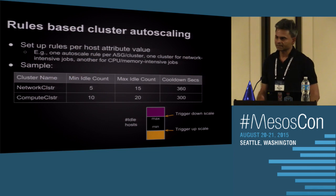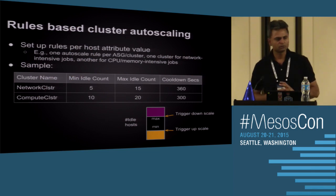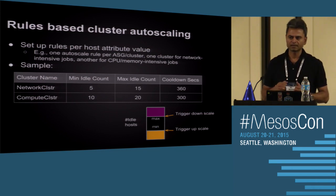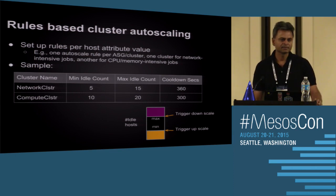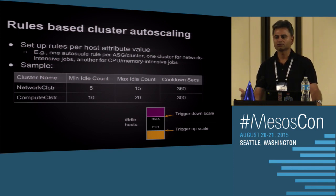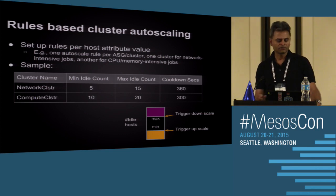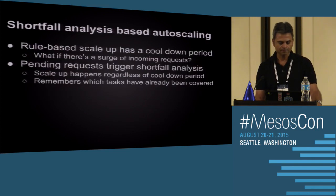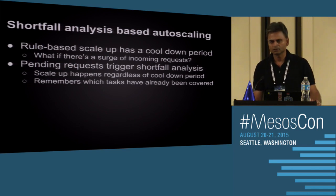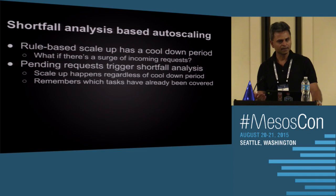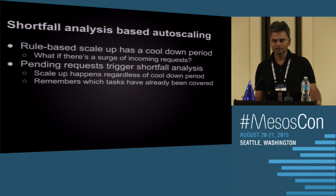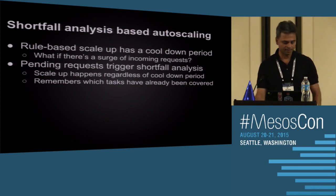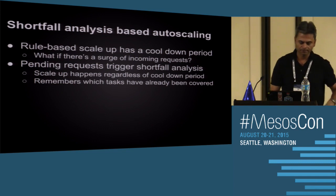In an auto-scaling environment, there's normally a cool-down period after scaling up so you don't scale again before new instances come up. However, a sudden influx of new workload during the cool-down period would leave you short again. FENZO does a resource shortfall analysis — looking at how many resources are actually needed — and scales up aggressively even during the cool-down period. Later, if the resources aren't necessary, it scales back down.